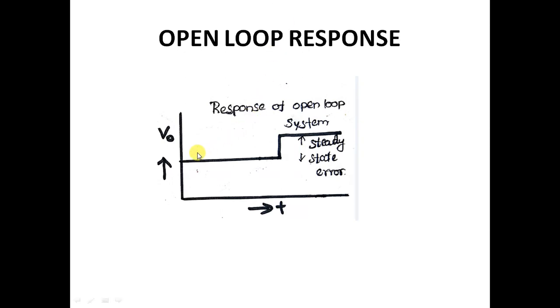Response of open loop system. There is an increase in the speed, but this blind man cannot observe. He will continue to run at high speed. If this is the set speed and this is the actual speed, this difference is steady state error.